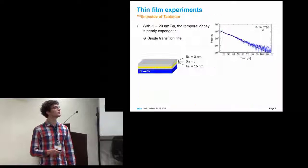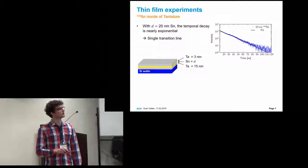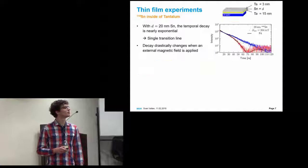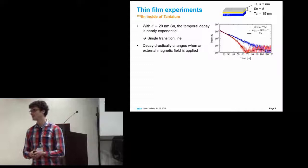The first experiment we made, we embedded tin inside of tantalum. At first, we made a relatively thick film of 20 nanometers. As you can see, the temporal decay is nearly a straight line. There might be some small features, but it's like a single transition. Now, if we apply an external magnetic field of 300 millitesla, we get this drastic change in the time spectrum. We can reconstruct a magnetic hyperfine field of 300 millitesla and its orientation.